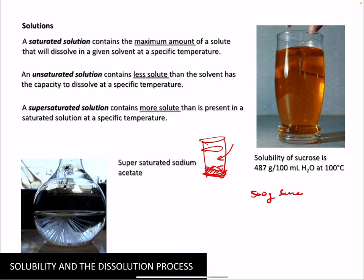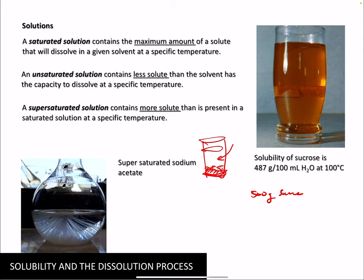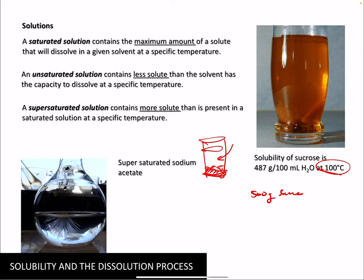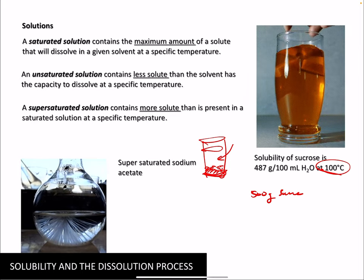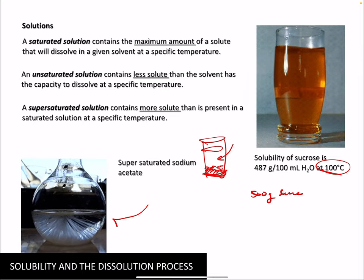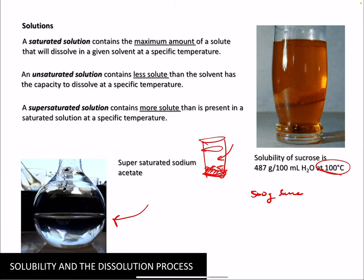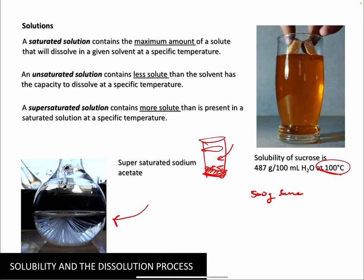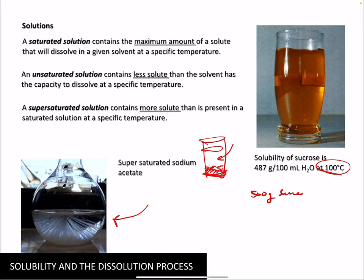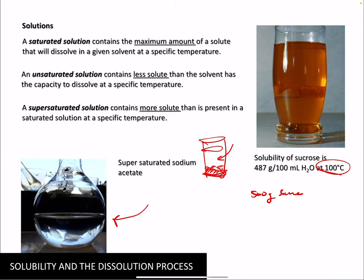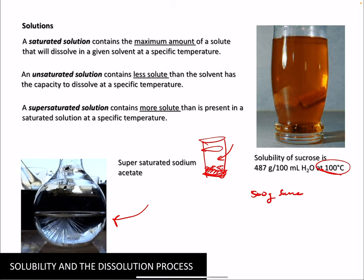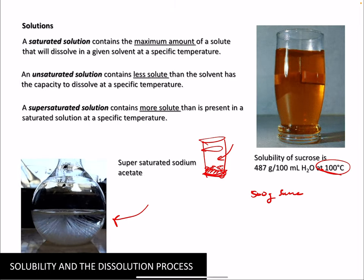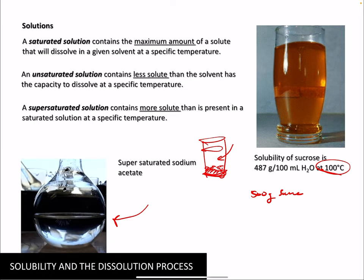Supersaturated solutions are made by heating beyond the target temperature to dissolve more, then letting it cool slowly. If you're careful, you get a supersaturated solution like this sodium acetate solution — clear and colorless, but holding more solute than normally possible. These solutions aren't stable: if you knock or jostle the flask, crystals start to form and precipitate out of the supersaturated solution.